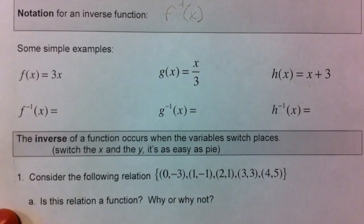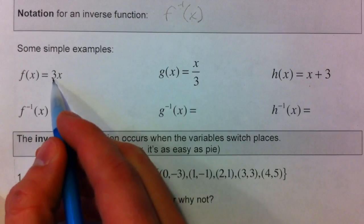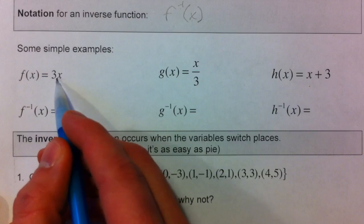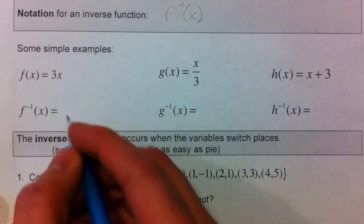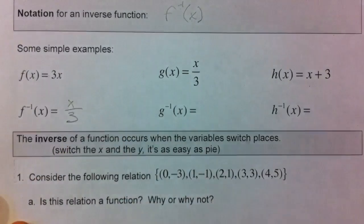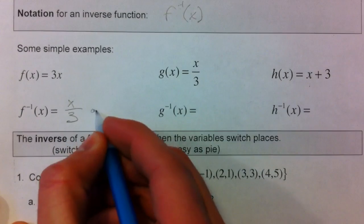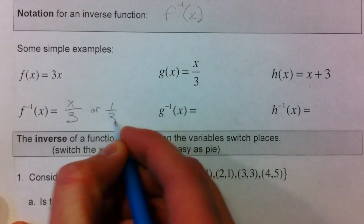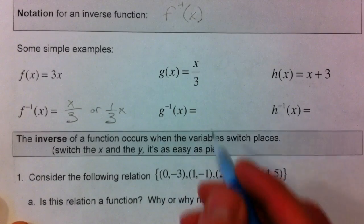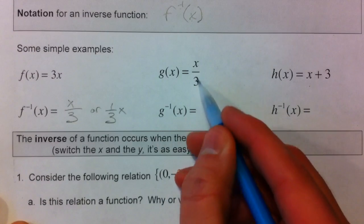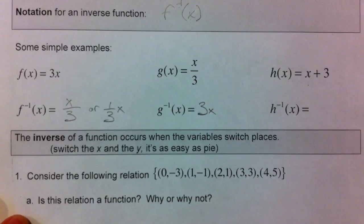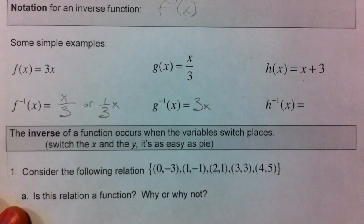Let's start with some simple examples. If 3 times x is the function — if we multiply by 3 — the opposite of multiplying by 3 is dividing by 3. So x divided by 3, or one-third of x, is going to be the inverse function. If we have divided by 3, the opposite of dividing by 3 is multiplying by 3, so g inverse is going to be 3x.